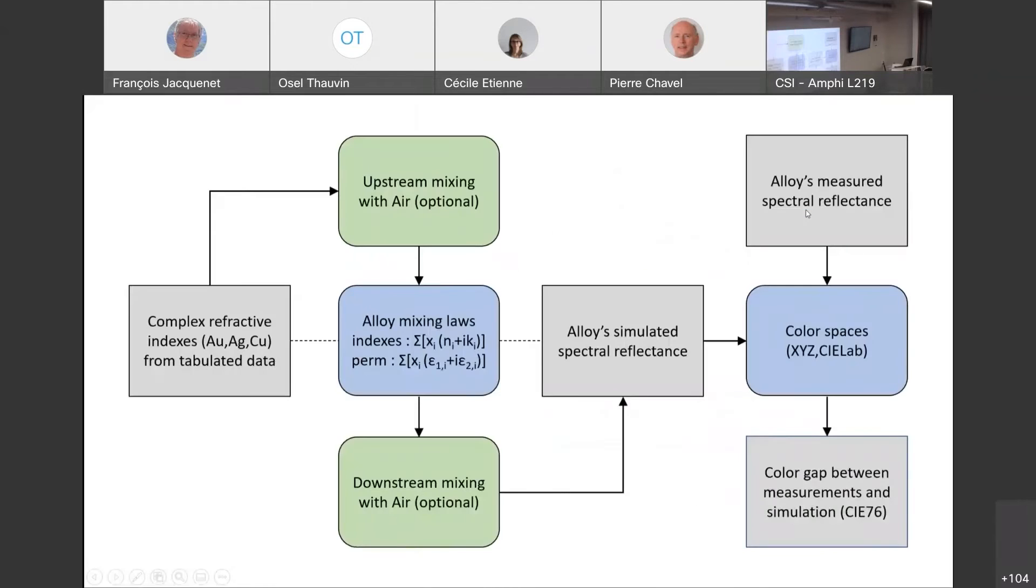Okay, so this is a summary of our work. We start in the left box with the tabulated refractive indexes for each pure metal. Then we can apply a mixing law with air to correct the gap due to micro-roughness.